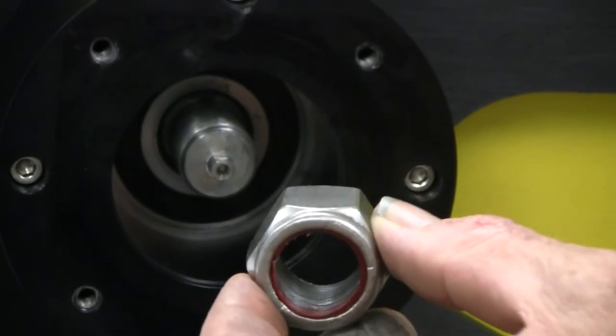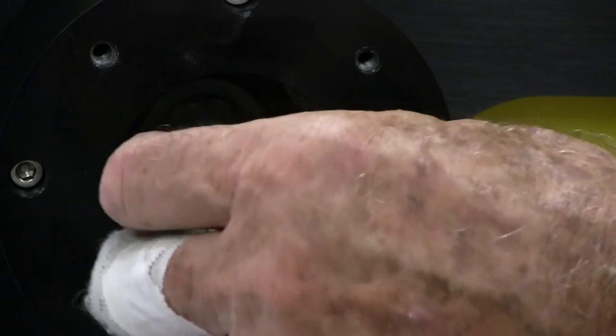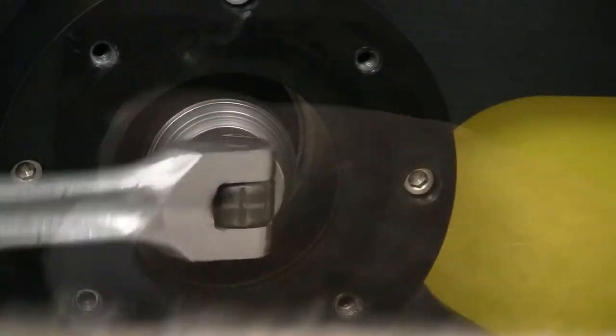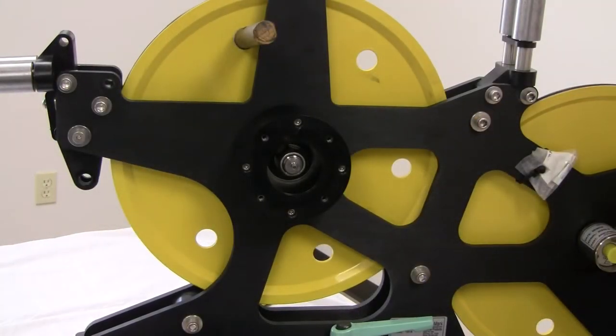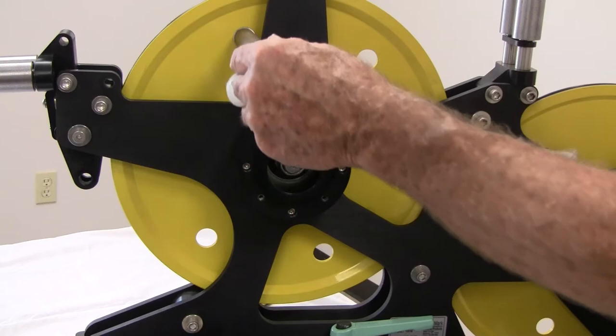Reposition the large wooden dowel in the wheel and tighten the nut with a wrench. Remove the wooden dowel and rotate the measuring wheel to verify proper installation.